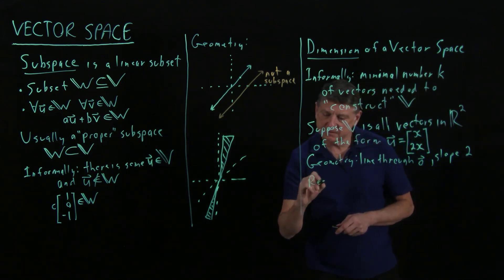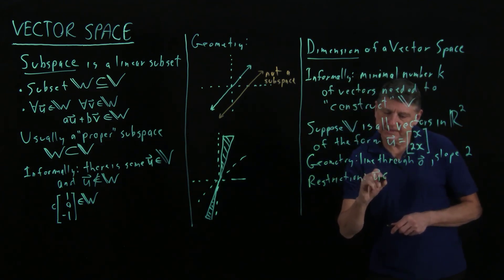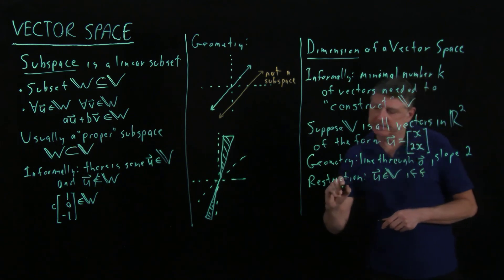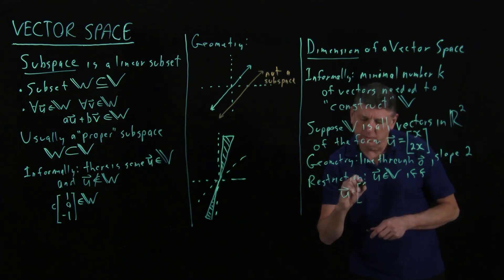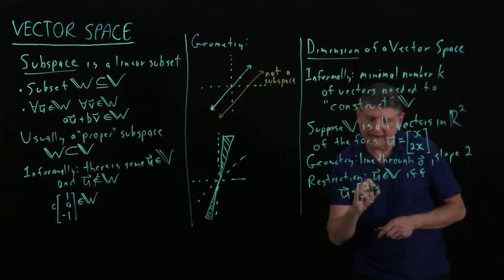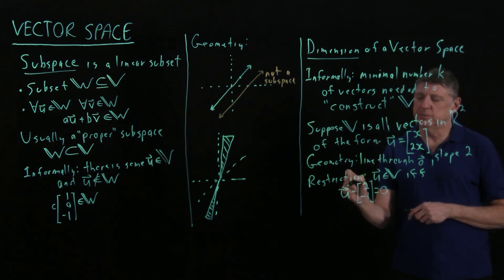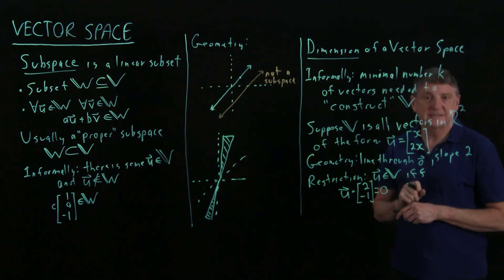A restriction form of this is u is in the vector space I'm trying to construct if and only if, and let's suppose we say that the rule is that u, the dot product of u with the vector 2 minus 1 has to equal 0. And you can work out, if you let the entries of this vector be u1, u2, you can work it out. And what you'll, if you work this out carefully, you'll find that this restriction form of the definition of our vector space and this constructive definition result in the same vector space.